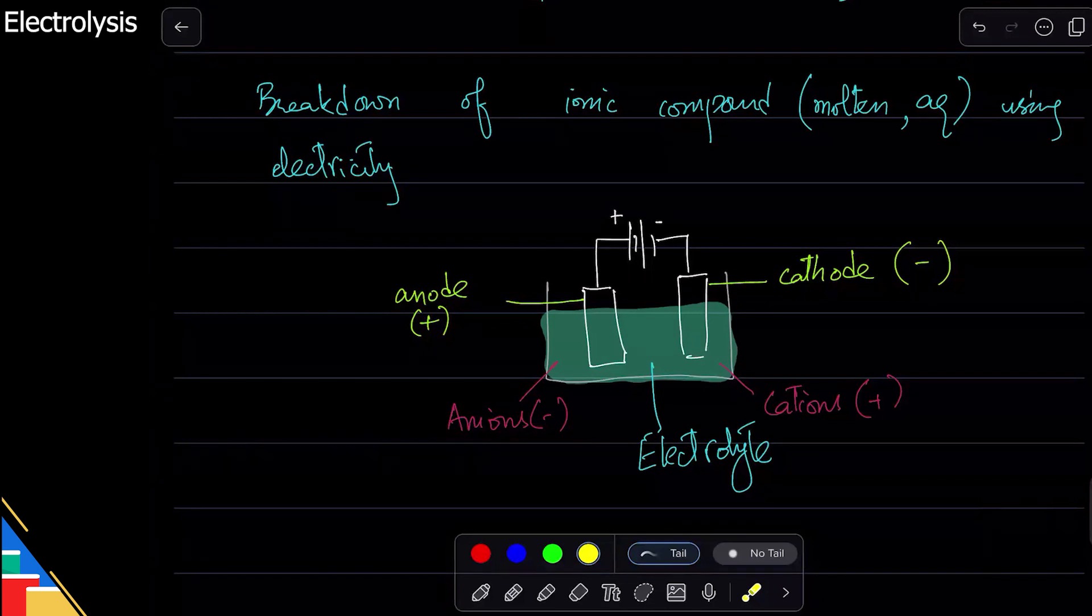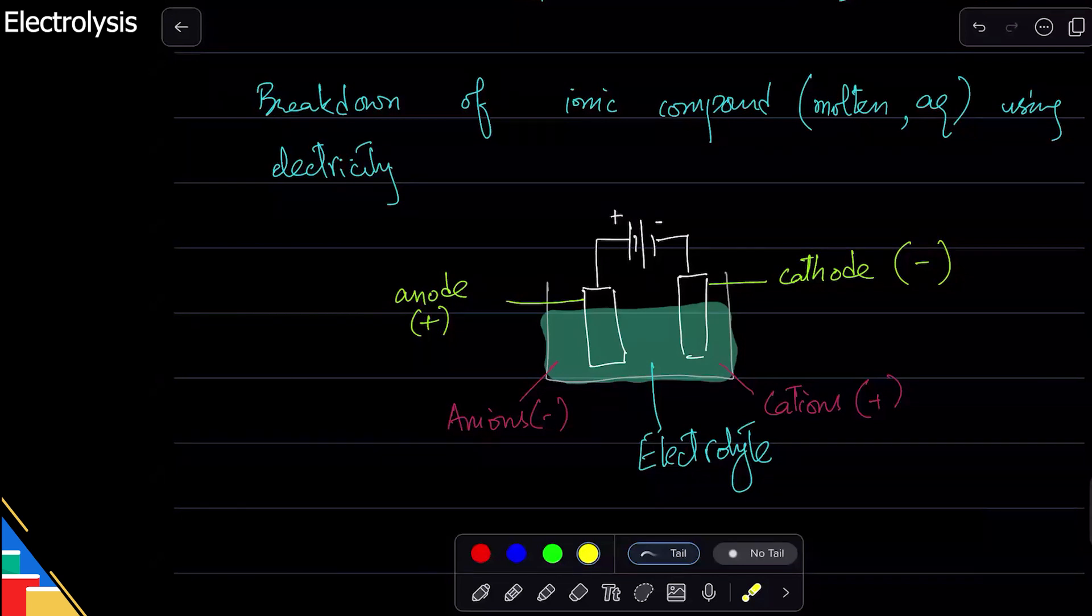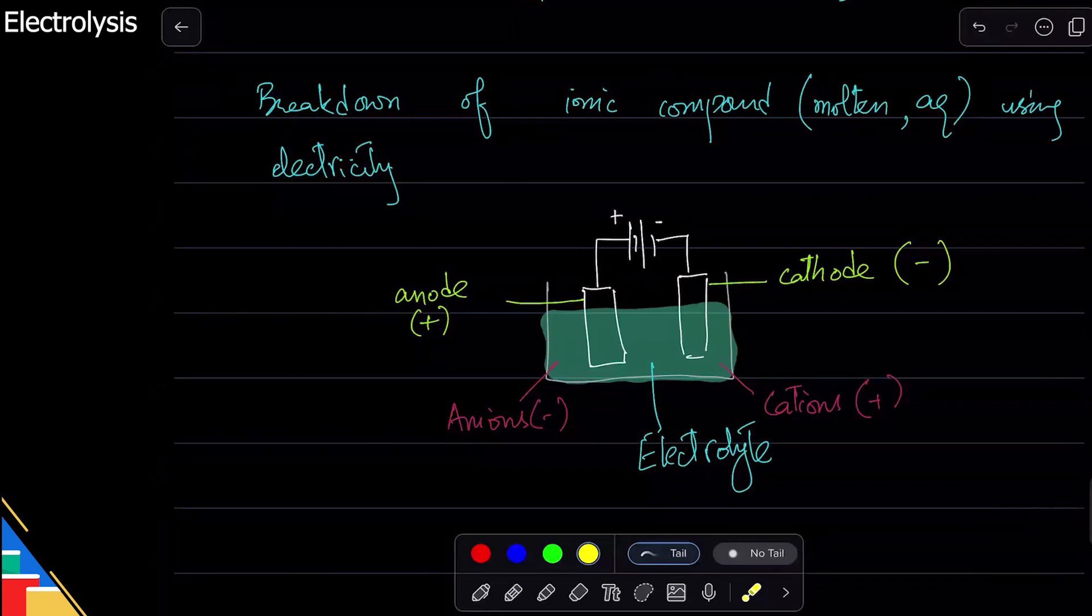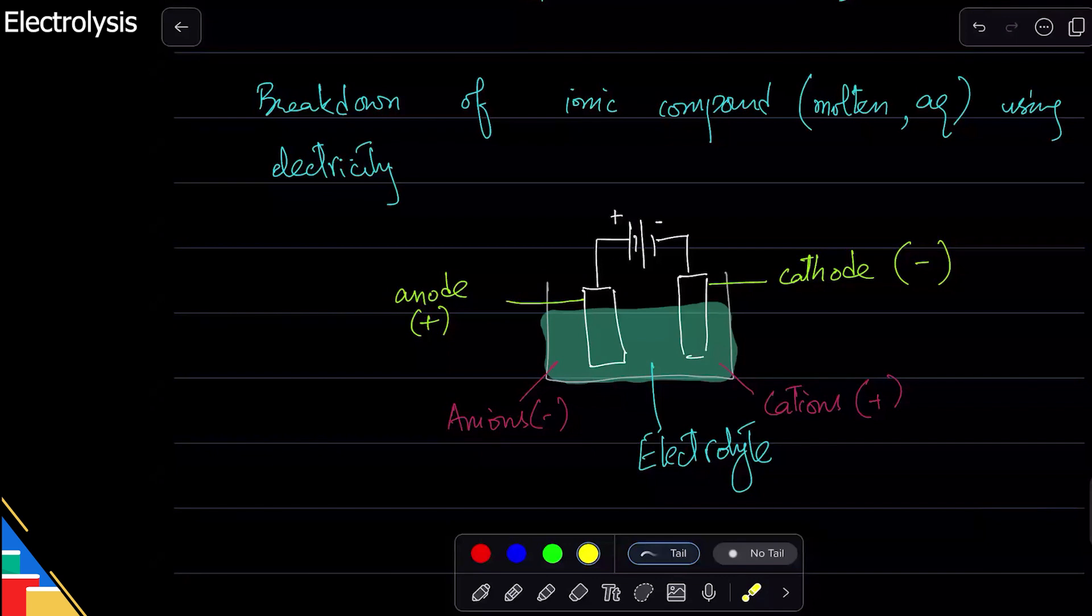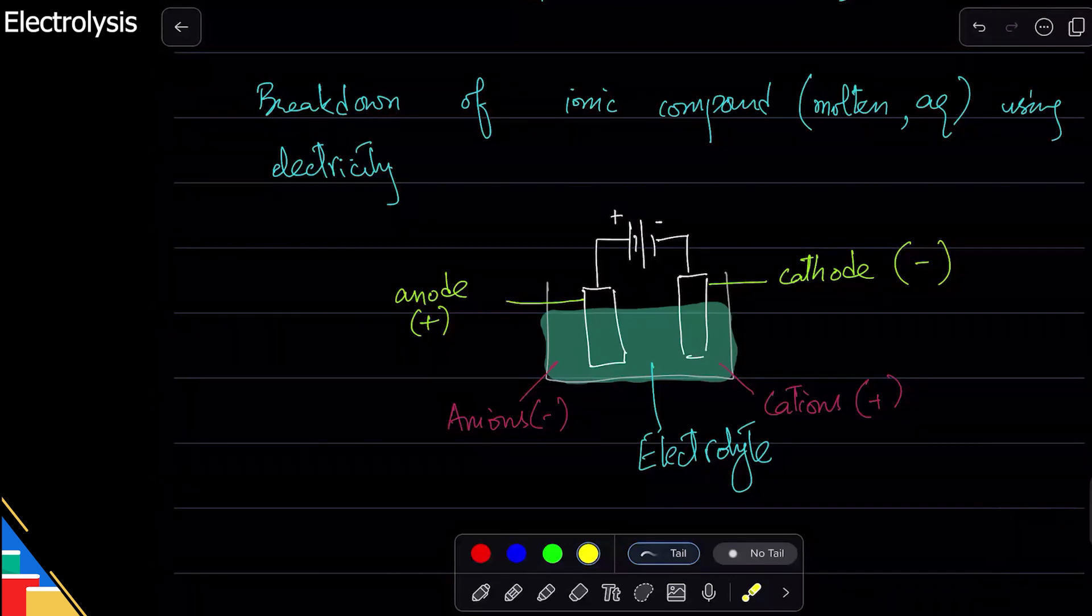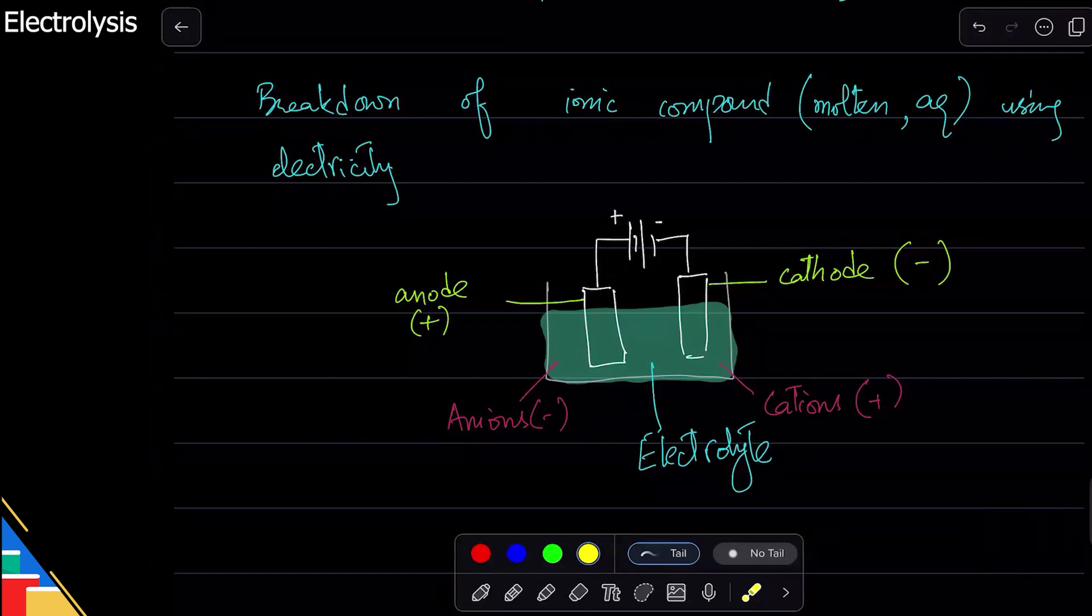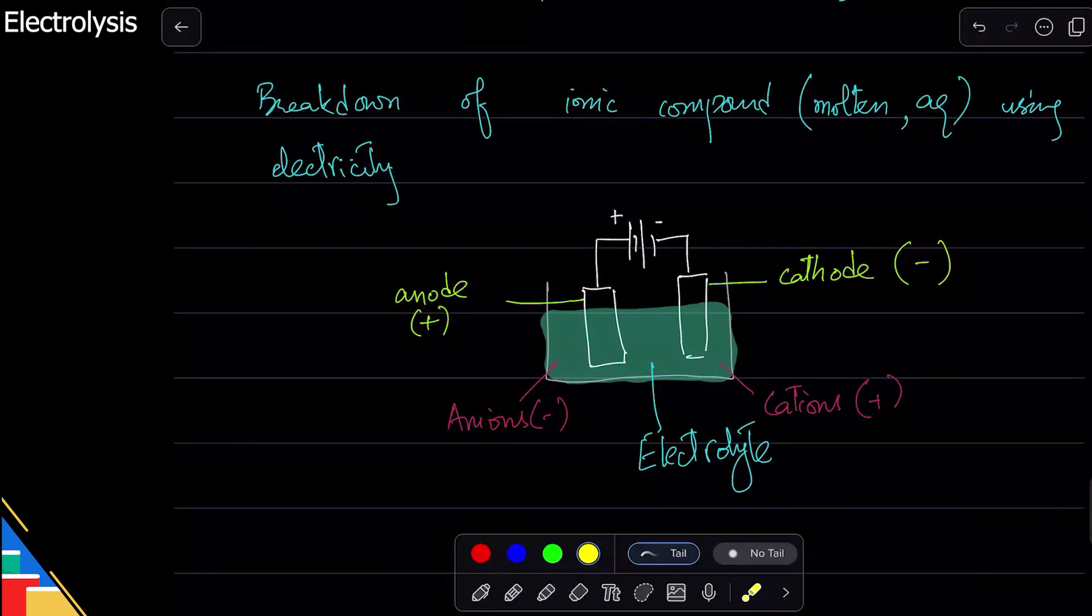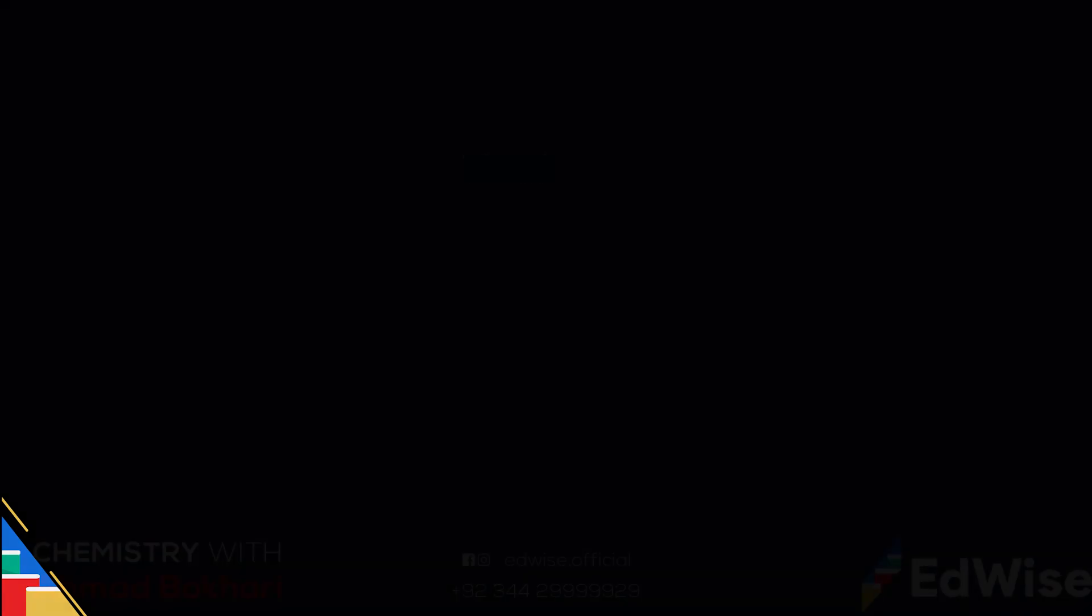Is pure water an electrolyte? No, sir. Good. Why not, sir? Because water means no ions unless ionization, like an acid or base. Excellent, excellent. So because pure water has no ions, it's not an electrolyte. But you add an impurity to water—that impurity can be alcohol, that impurity can be salt, that impurity can be acid or alkali—you add an impurity to water, water will form ions, and those ions will then transfer electricity. Those ions will make it an electrolyte.